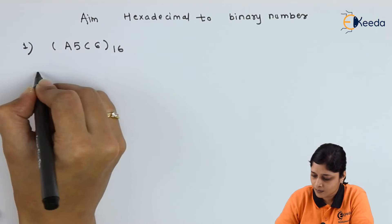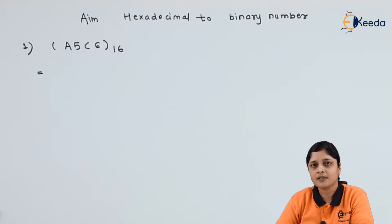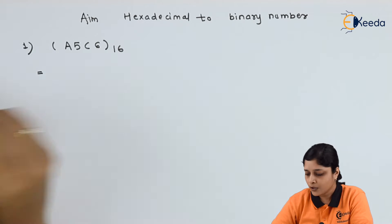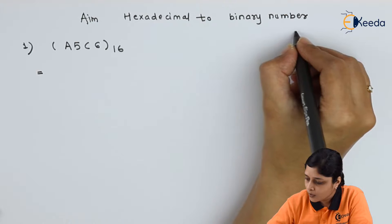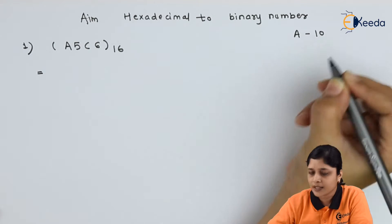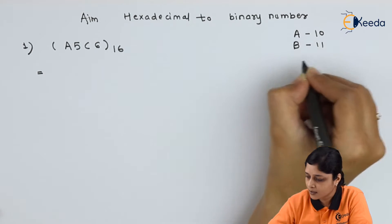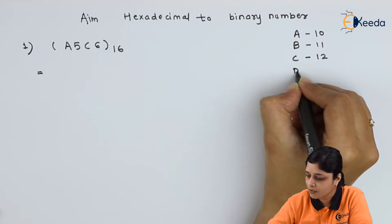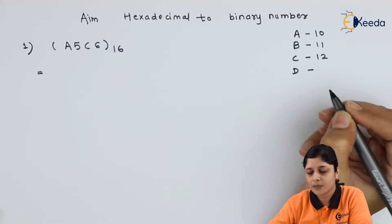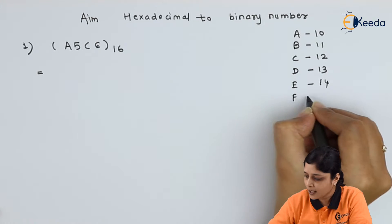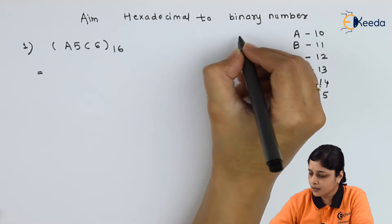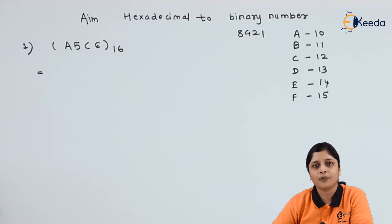We are in hexadecimal number system, so we have these digits: A, 5, C, 6. You have to write down the hexadecimal number system table with the equivalent decimal numbers. For A you will get 10, and for F you will get 15. Then use the 8-4-2-1 approach.